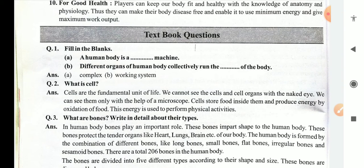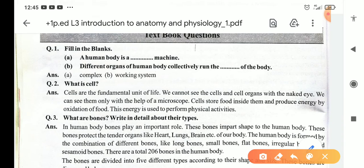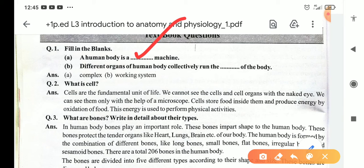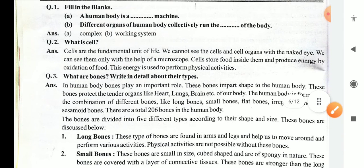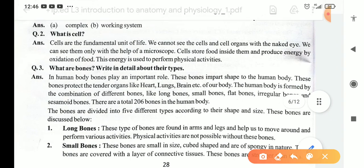Now let's do some textbook questions. Fill in the blanks: a human body is a complex machine. Different organs of the human body collectively run the working system of the body. Cells are the fundamental unit of life. We cannot see cells with the naked eye; we can see them only with the help of a microscope. Cells store food inside them and produce energy by oxidation of food, which is used to perform physical activities.